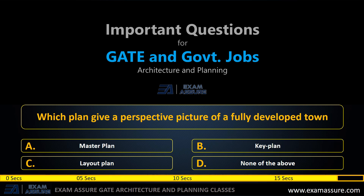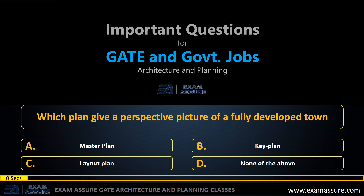Next question. Which plan gives a perspective picture of a fully developed town? Option A: Master plan. Option B: Key plan. Option C: Layout plan. Option D: None of the above. The correct answer is: Master plan.